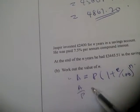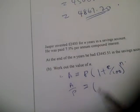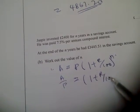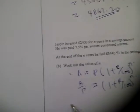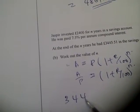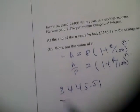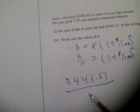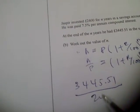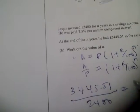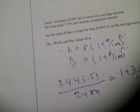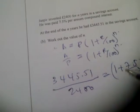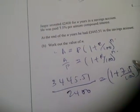Rearranging gives A over P equals (1 + r/100) to the power n. Substituting the values: 3445.51 divided by 2400 equals (1 + 7.5/100) to the power n.